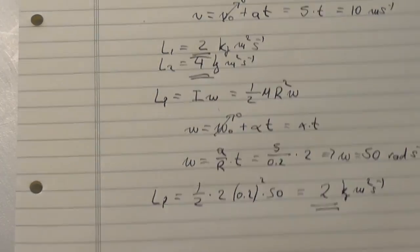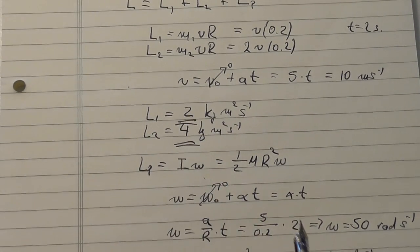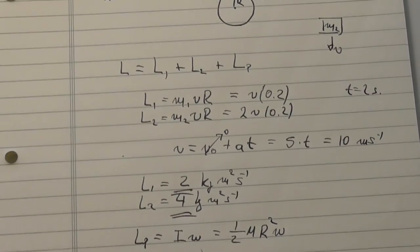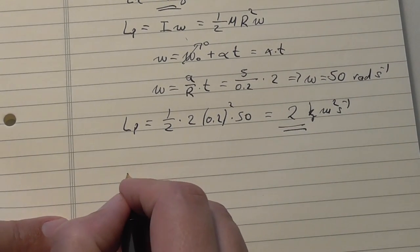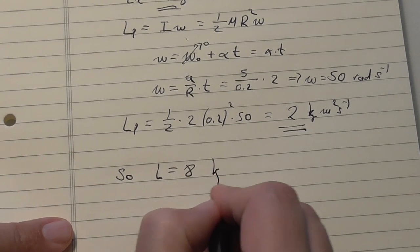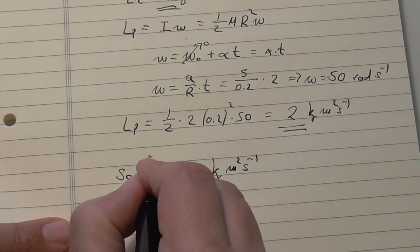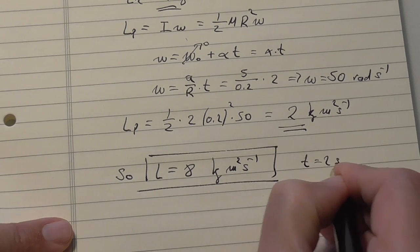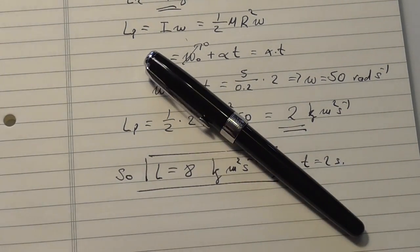We have to add all this angular momentum, 2 plus 4 plus 2, that would be 8, so we need to calculate the sum of all three masses. The angular momentum is 8 kilograms meters squared per second, when at t is equal to 2 seconds. And that's it. Thanks for watching!